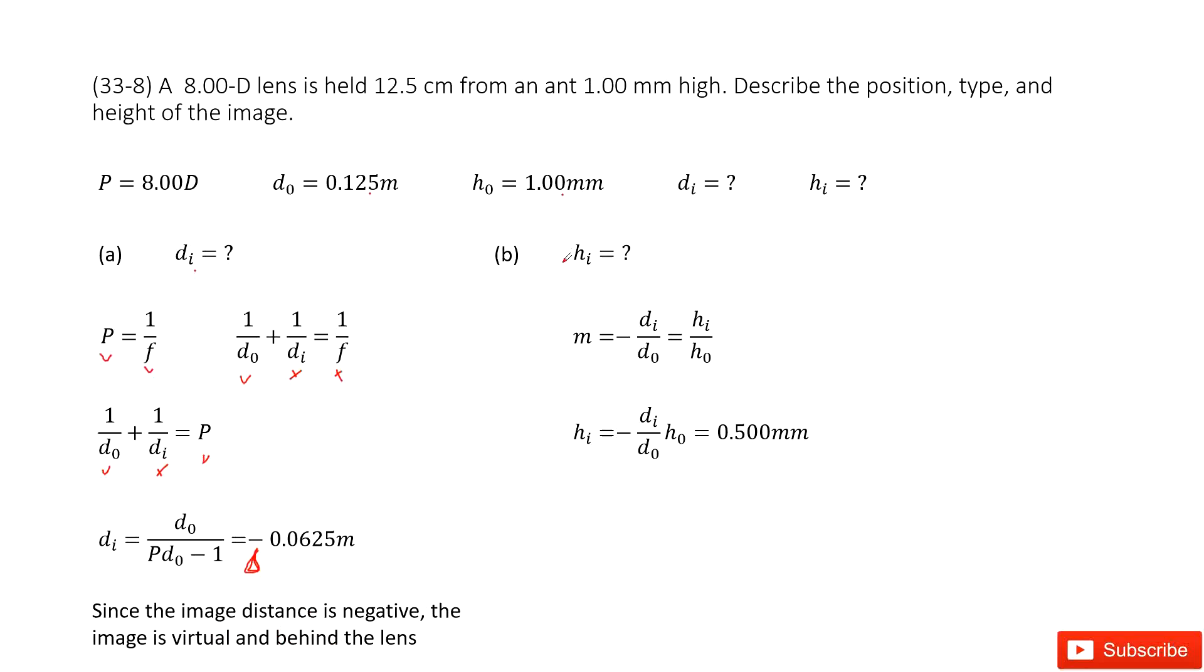The second part, we need to find the hI. So how can we do that? We can consider magnification. By definition, the magnification is negative dI over d0 equal to hI over h0. So we look at there. dI is given, d0 is given, h0 is given. So we need to find the hI.